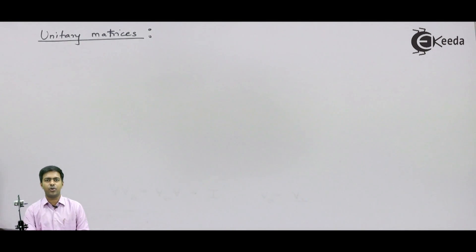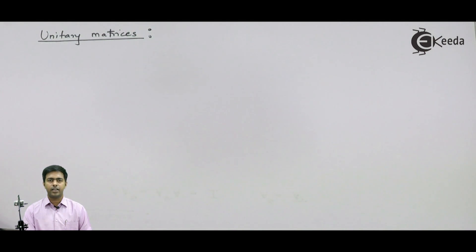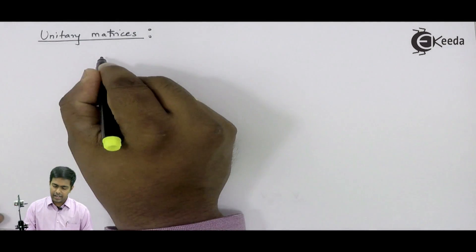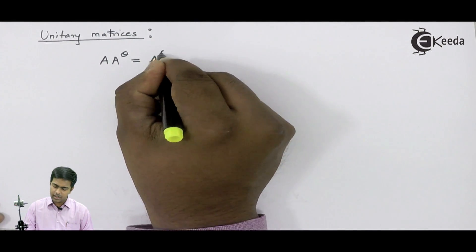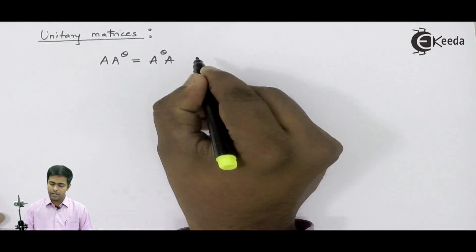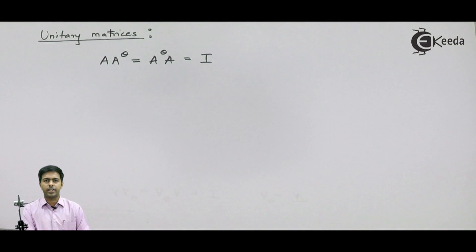In this video, let's learn the concept of unitary matrices. A square matrix A is called a unitary matrix if it satisfies the condition A times A-theta, or A-theta times A, equals the identity matrix I.